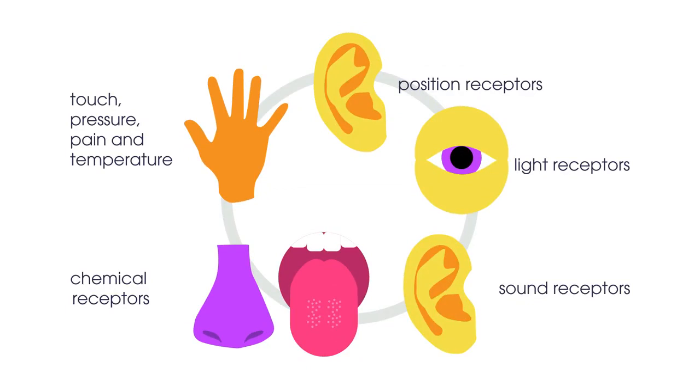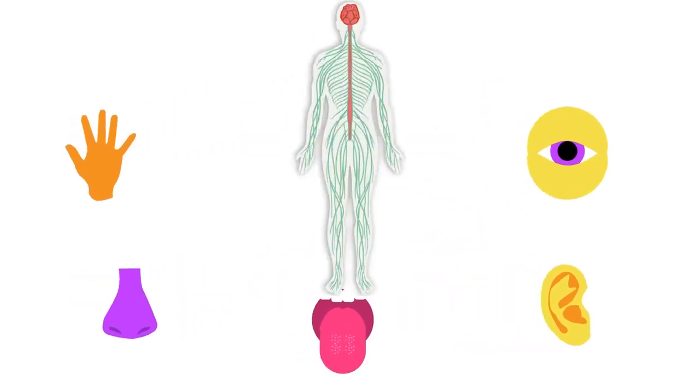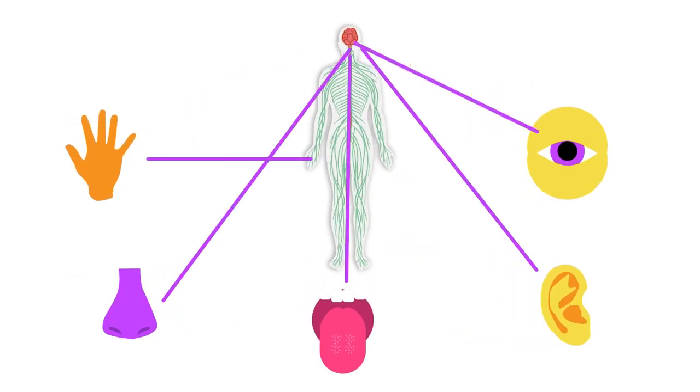When the receptor cells of the sense organ are stimulated, they relay this information along nerve cells or neurons to the central nervous system. There are different types of receptor cells which are sensitive to different stimuli.